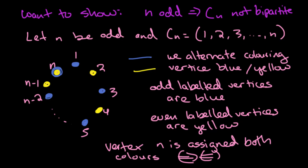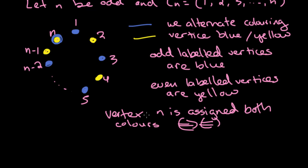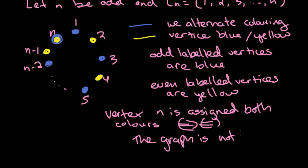We have run into a problem. As we learned in a previous video, when you do this type of coloring and a vertex is assigned both colors, this tells you right away that the graph is not bipartite. The graph is the cycle Cn — the edges go all the way around — and that is, in fact, the proof.